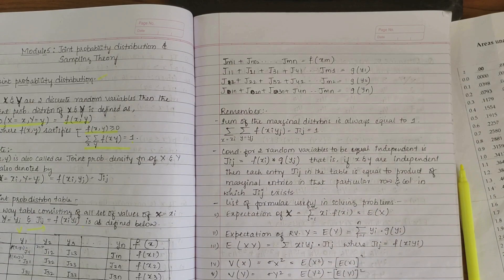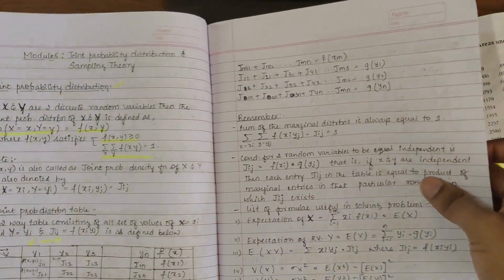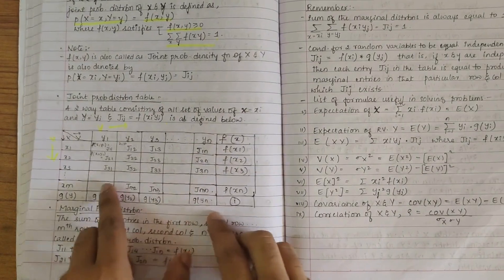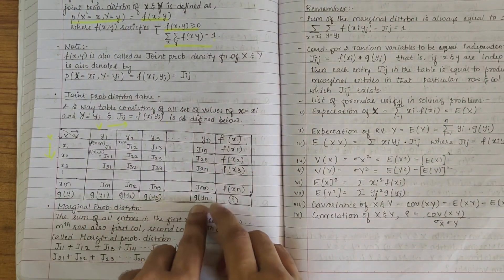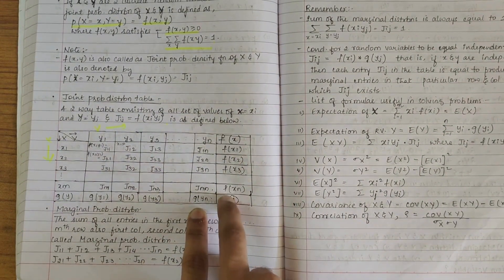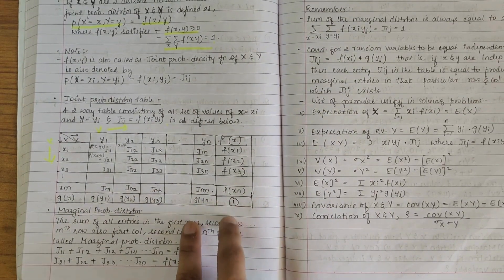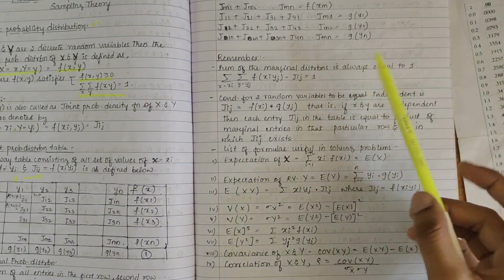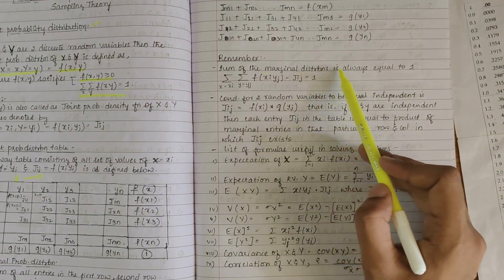So one thing to remember is that the sum of all g's, g(Y) till g(Yn), and all f(Xn), if you add it you'll get one. So yes, that's what is given here. The sum of marginal distributions is always equal to one.